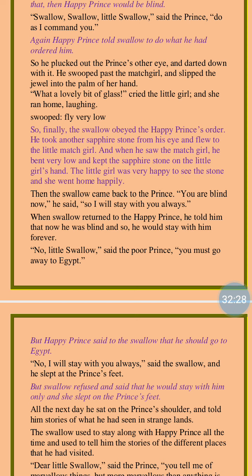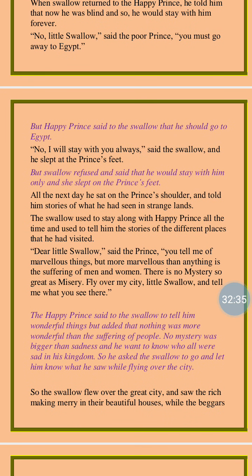All the next day he sat on the prince's shoulder and told him stories of what he had seen in strange lands. The swallow bird used to sit on the Happy Prince's shoulder and tell him about the different places and the miseries of the people he had seen. 'Dear little swallow,' said the prince, 'you tell me of marvelous things, but more marvelous than anything is the suffering of men and women. There is no misery so great as misery. Fly over my city, little swallow, and tell me what you see there.' The prince said he wanted to know the miseries of the poor people and would try his best to help them.